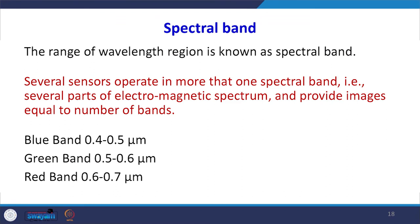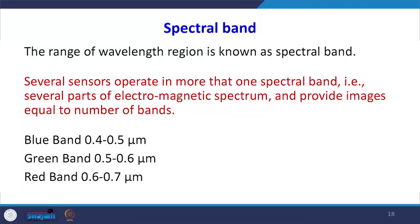A frequently used term in remote sensing is spectral bands. A spectral band is a certain wavelength region — for example, the blue band is 0.4 to 0.5 micrometers. Instead of writing out the wavelength region every time, we can refer to band 1, band 2, band 3, and so on. We can define the electromagnetic spectrum either by color or by spectral band number, specific to a given sensor.